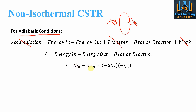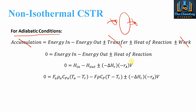So we have enthalpy in minus enthalpy out, plus or minus the reaction term: ΔHr multiplied by the rate multiplied by the volume. The enthalpy is expressed as the flow rate times density times specific heat capacity times the change in temperature. The inlet temperature is T0, which comes into the system, and T is the outlet temperature.